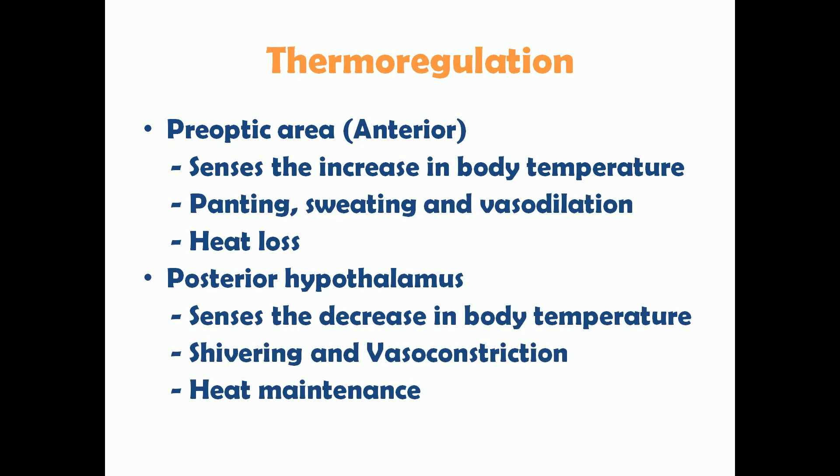A very important function of the hypothalamus is thermoregulation — regulating body temperature. This is mainly mediated by two areas: the preoptic area, located anteriorly, and the posterior hypothalamus. The preoptic area senses an increase in body temperature and, when activated, stimulates panting, sweating, and vasodilation. These mechanisms cause heat loss and thus decrease body temperature.